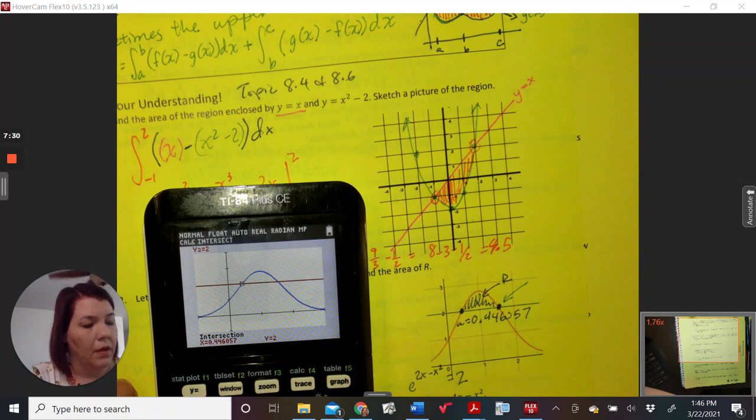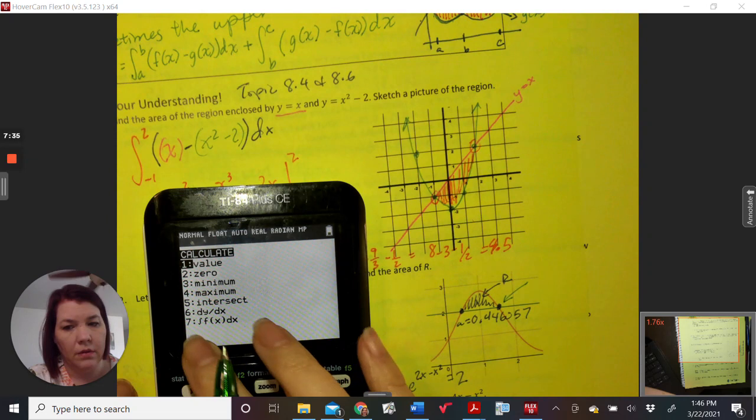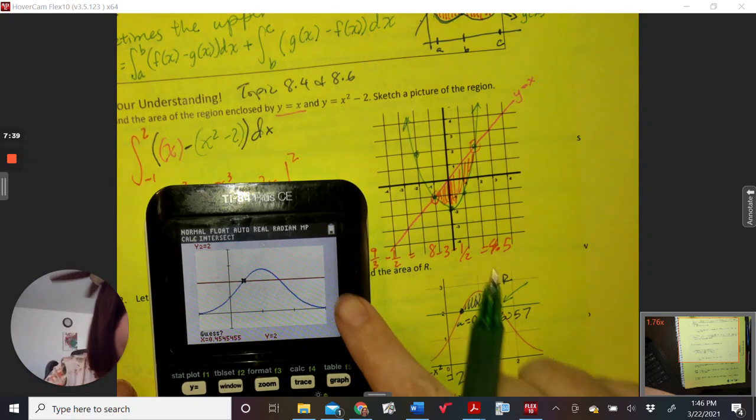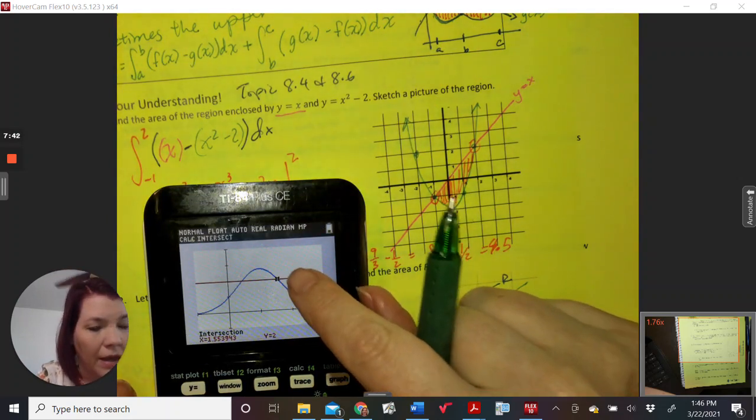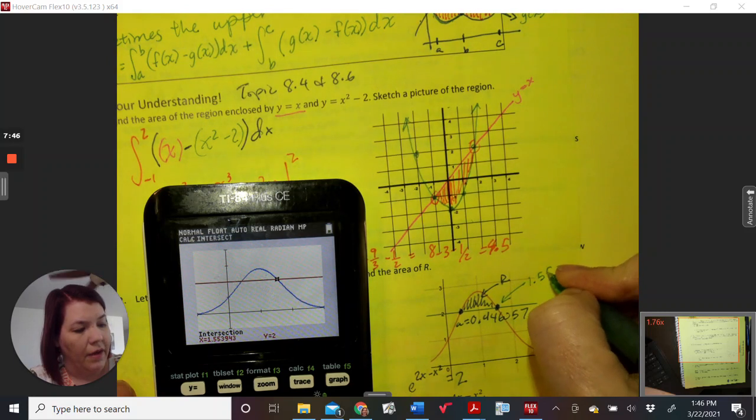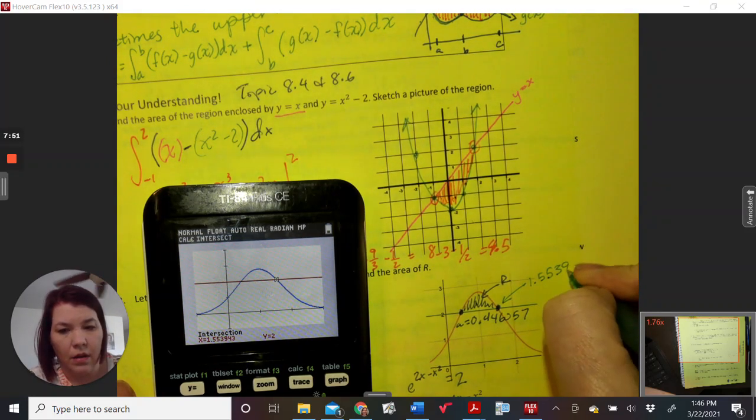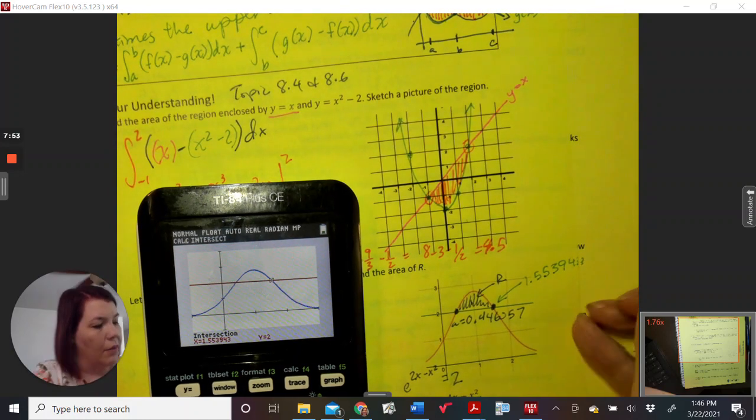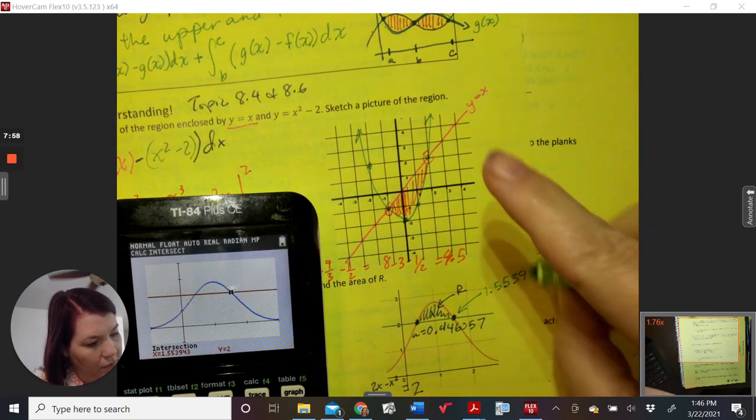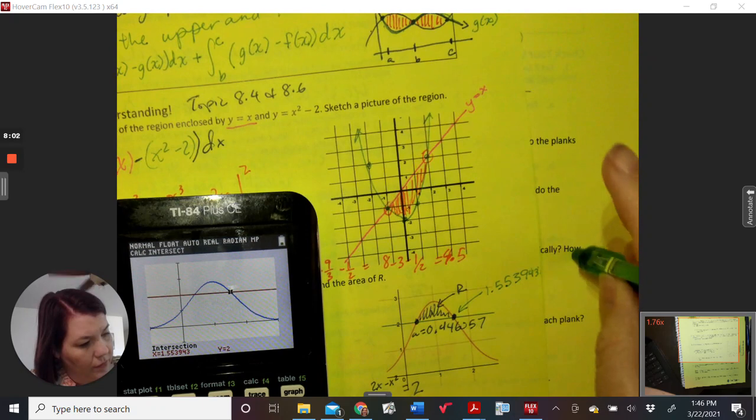Then this one. So, second trace, number 5. First curve, second curve. And I guess maybe at 1.5 over there. So you have to get close to that. And I got 1.5, 5, 3, 9, 4, 3. And I'm writing the whole number from my calculator down so that when I do the interval, it's more reasonable.